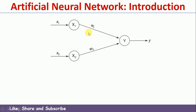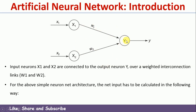Now, what kind of computation takes place in each neuron? For example, at output neuron Y, two kinds of operations take place — every neuron performs these two things. First, it performs something called summation, and then it applies something called an activation function on top of that summation. The summation is nothing but the sum of the product of input and weight: Y_in = X1*W1 + X2*W2, where X1 and X2 are inputs and W1 and W2 are the weights. Once you get Y_in, you apply the activation function to get the final output.